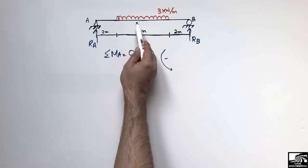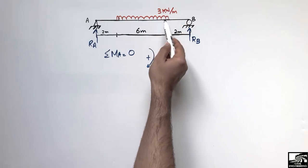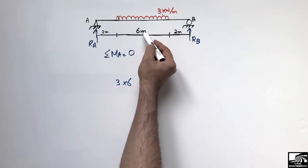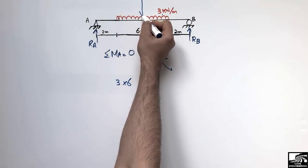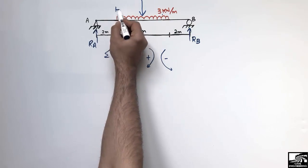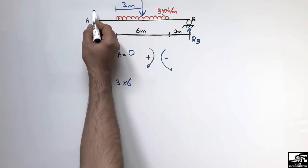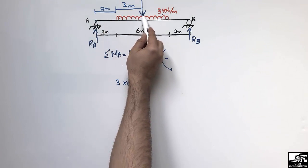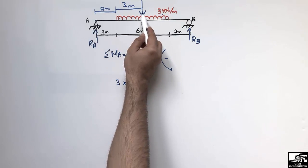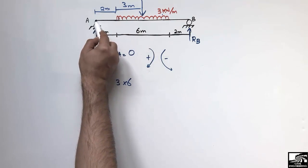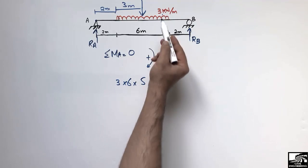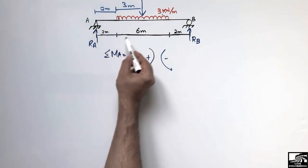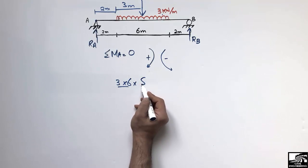The 3 kN/m load acts clockwise relative to point A, so it is positive. We convert the uniformly distributed load into a concentrated point load by multiplying 3 by 6. This concentrated load acts at the center of the 6-meter length, which is 3 meters from each end of the distributed load — 2 meters from point A and 3 meters further, giving a total moment arm of 5 meters from point A.